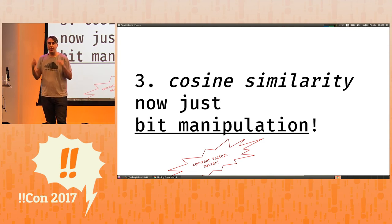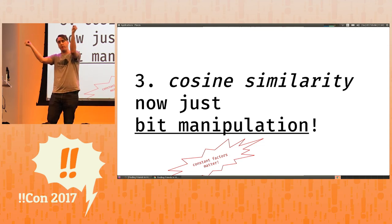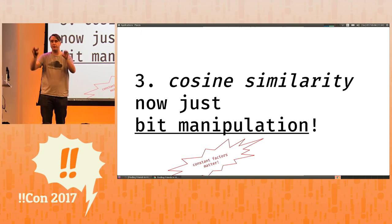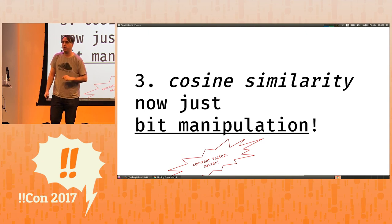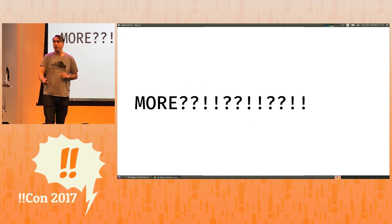Also, we can use the fact that the Hamming distance was proportional to the angle to reduce all angle calculations to just bit math, which CPUs are very good at. And this is the only time in my career as a software engineer, which is very short, where a constant factor actually mattered in an algorithm.